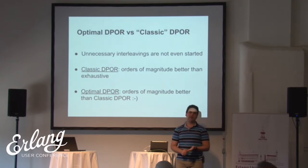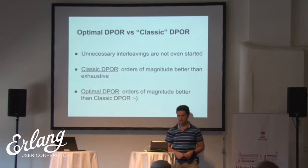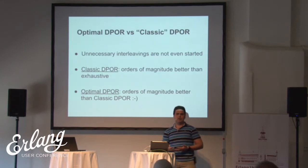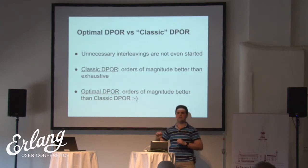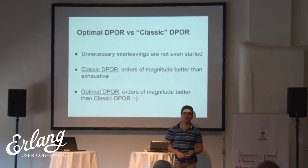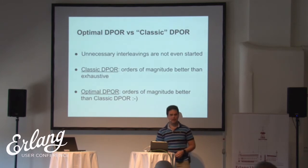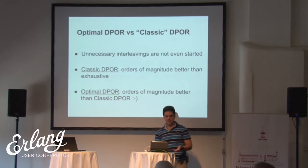Optimal dynamic partial order reduction, which is employed by Conqueror instead of classic dynamic partial order reduction, has the additional benefit that it does not even start additional redundant interleavings. The best possible classic method could start an interleaving, figure out that we are actually exploring exactly the same thing, hide it under the carpet, and assume we never did this. So even though classic dynamic partial order reduction techniques improved by orders of magnitude over exhaustive exploration, optimal dynamic partial order reduction improves by orders of magnitude over classic DPOR.